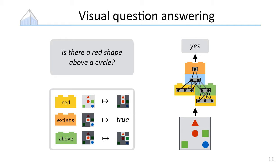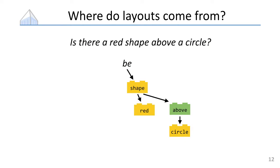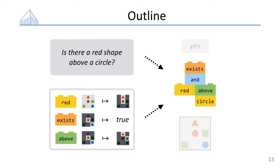The approach we took was: rather than building a monolithic neural network, every time we see a new question we build a neural network on the fly from little pieces. The rules for putting together that neural network come from a linguistic analysis of the question. So if the question is 'is there a red shape above a circle,' we run our parser to get a tree-shaped structure, then turn that tree into a template for assembling a full neural network out of fragments.